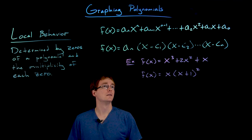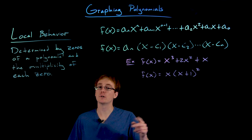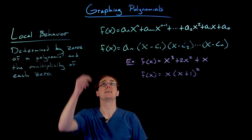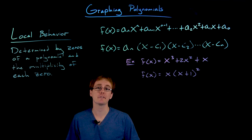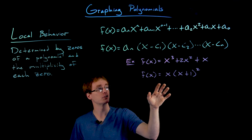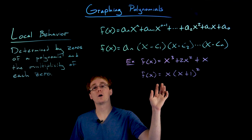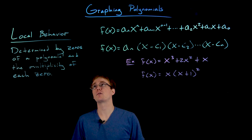Here we have a quick example of a polynomial function expressed in two different forms. The expanded form, x cubed plus 2x squared plus x, lets us quickly see the leading term and determine the end behavior. From the factored form, x times the quantity x plus 1 squared, we can quickly identify the zeros of our polynomial, even though we don't see the leading term as readily.